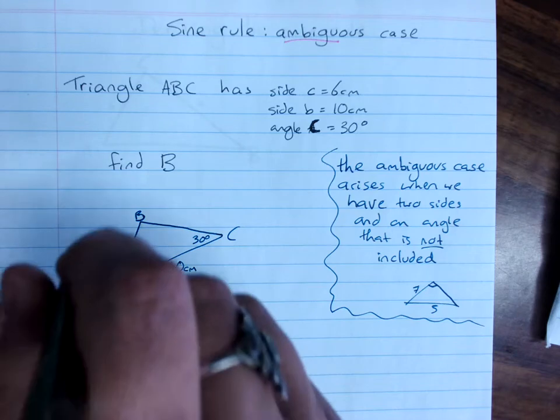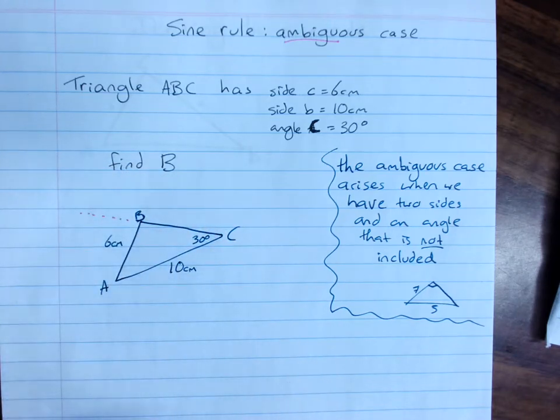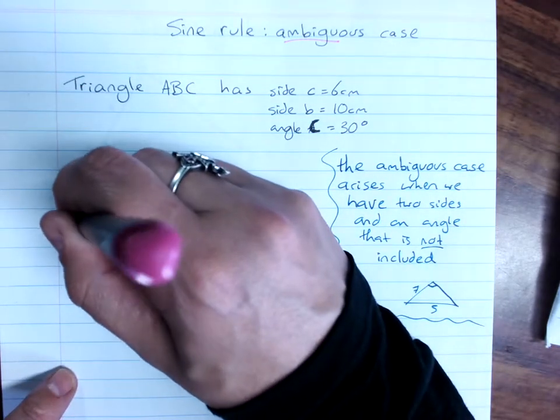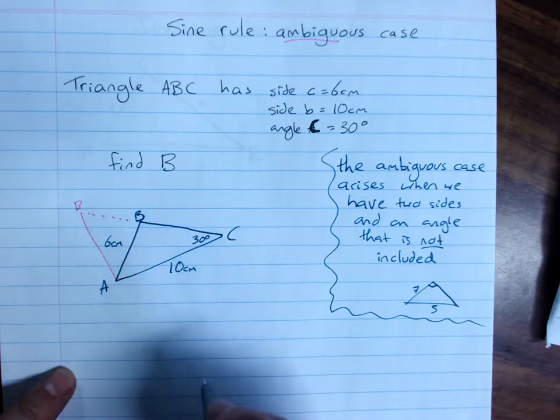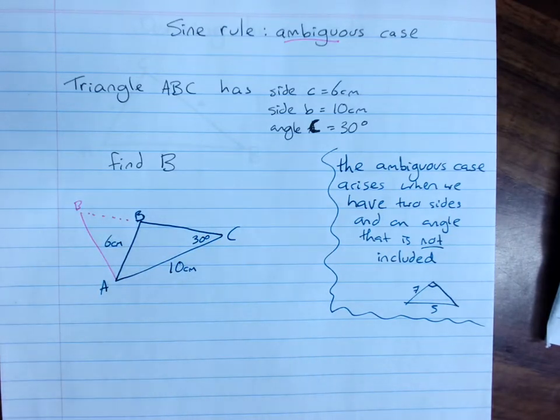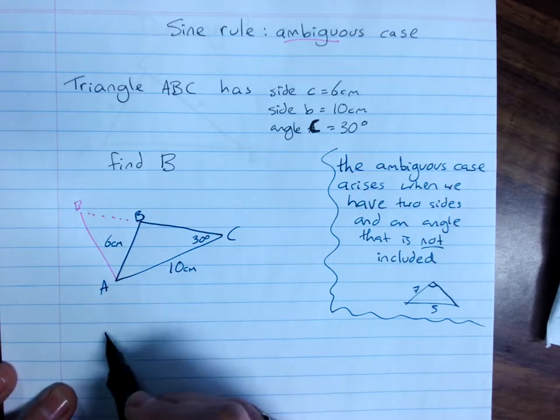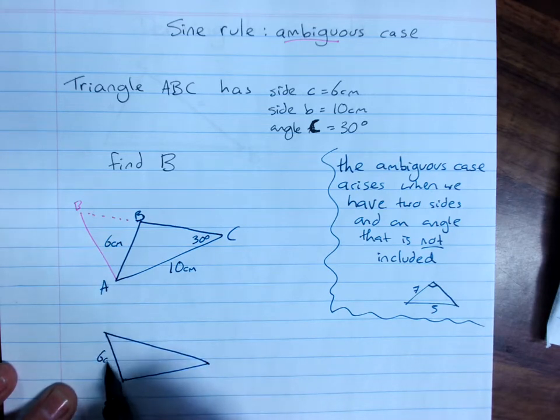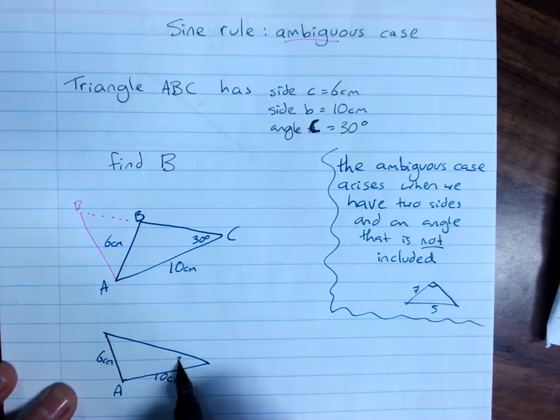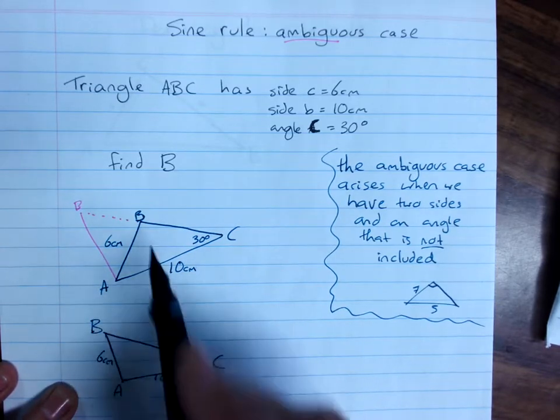And having that 6 centimeters go over there instead. So I'll draw that other triangle that I could have, because I could have this triangle or this triangle.